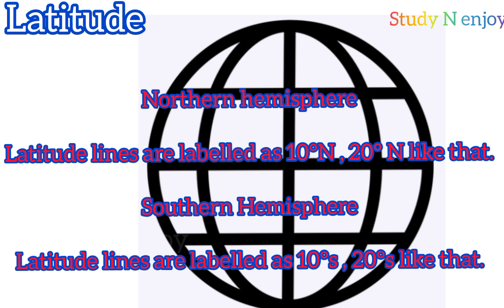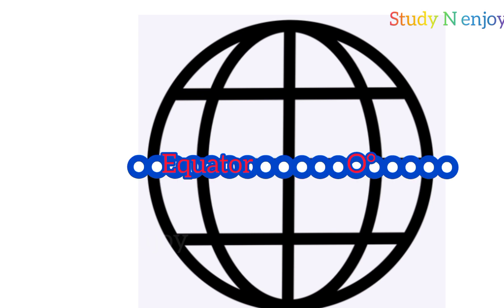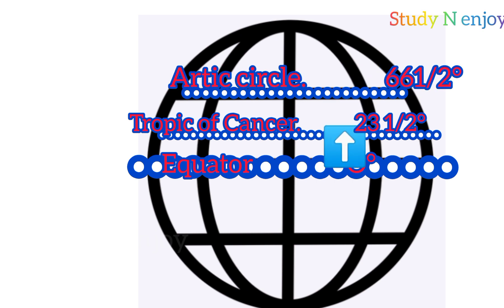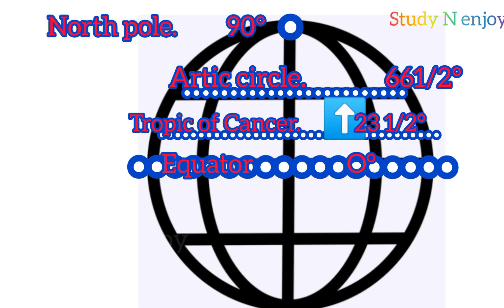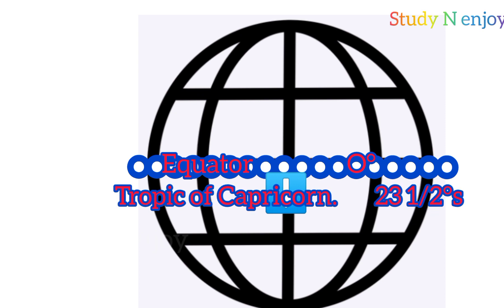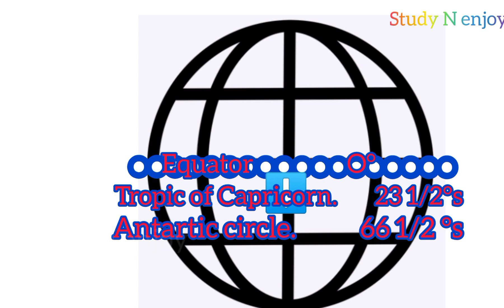Some latitudes have special names. The equator is at 0 degrees and is also called the great circle. Moving northward from the equator, we find the Tropic of Cancer at 23.5 degrees North. Moving further northward from the Tropic of Cancer, we find the Arctic Circle at 66.5 degrees North. In the southern hemisphere, the Tropic of Capricorn is at 23.5 degrees South, and the Antarctic Circle is at 66.5 degrees South.